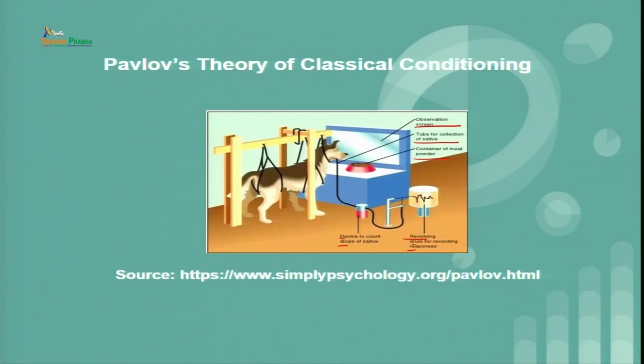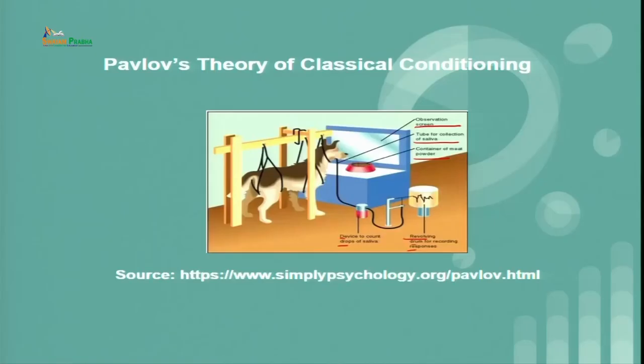On the second day, the bell again rang and the dog did not notice it. After the ringing of the bell, food was again supplied to the dog. On another day the bell rang again, but this time the dog had become conditioned that after the ringing of the bell, food is generally supplied. So as soon as the bell rang, the dog salivated, and the response was recorded by the device counting drops of saliva. That is the crux of Pavlov's theory of classical conditioning.